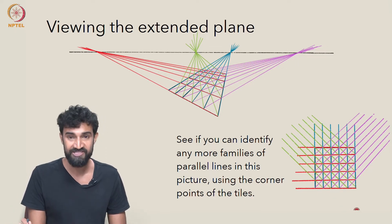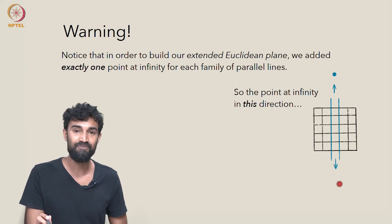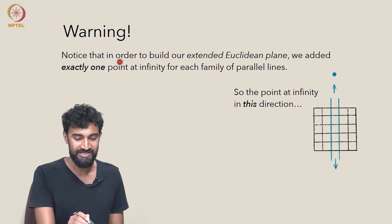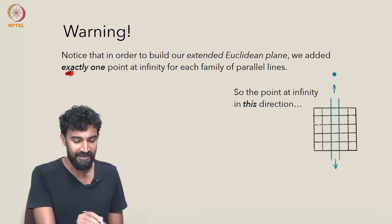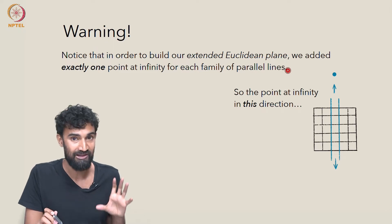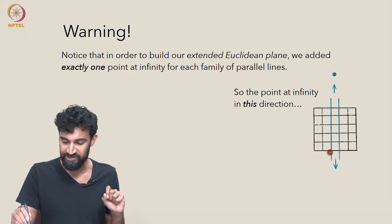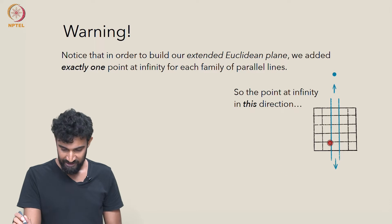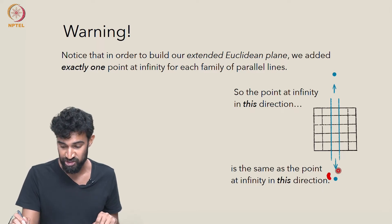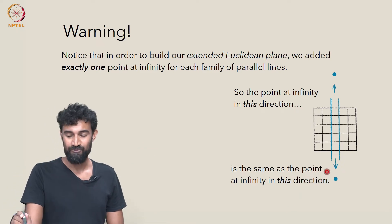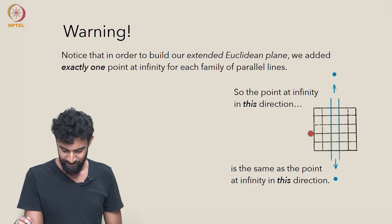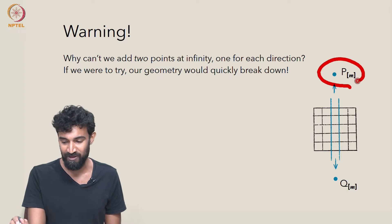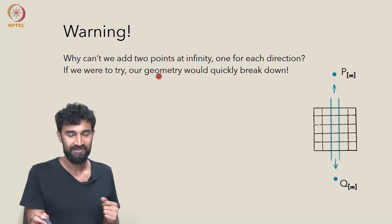This is one step towards viewing the extended plane, but here's an important warning, because our intuition can be misleading. To build our extended plane, we actually added exactly one point at infinity for each family of parallel lines. So the point at infinity in this direction — looking at these blue vertical lines — the point at infinity going upward is the same as the point at infinity in the downward direction. We get to the same point at infinity going up as we do going down, which is a little counterintuitive. Why can't we add two points at infinity, one for each direction — a PM up here and a QM down there?